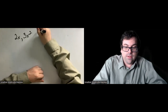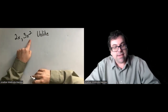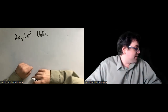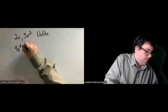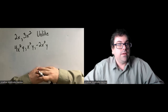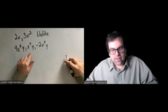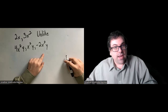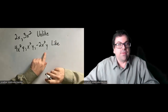So 2x and 3x squared would be unlike. They both have x, but this one is x to the first power and this is x squared. So they are unlike terms. How about 4x squared y and negative 2x squared y? Each of these has x squared y, so these are like terms.